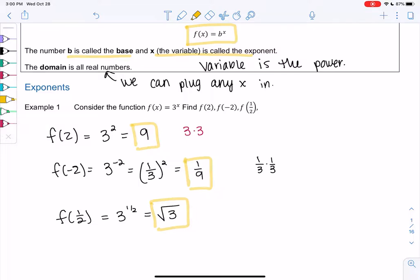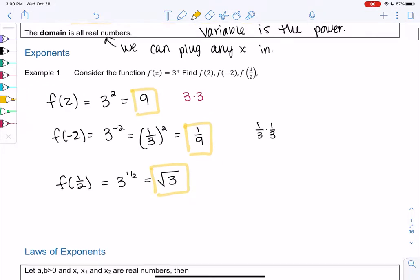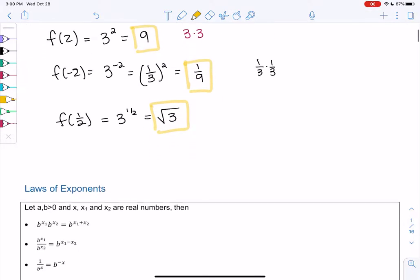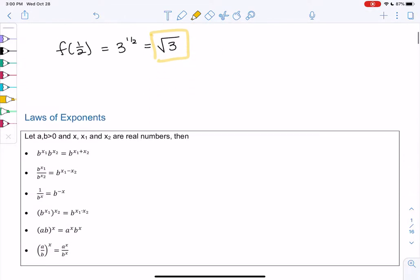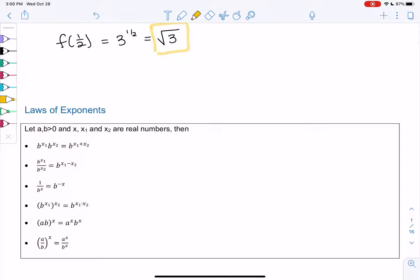Let's review some of the exponent rules so we know how to simplify these for the future. Laws of exponents: I'm going to have the base be positive, so a and b will be my bases for these examples, bigger than 0. And then x, x1 and x2 are all real numbers because those are the powers. So bases are positive, but powers can be anything for these rules.